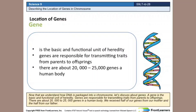Now that we understand how DNA is packaged into a chromosome, let's discuss about genes. A gene is the basic and functional unit of heredity. Genes are responsible for transmitting traits from parents to offspring. There are about 20,000 to 25,000 genes in the human body. We receive half of our genes from our mother and half from our father.